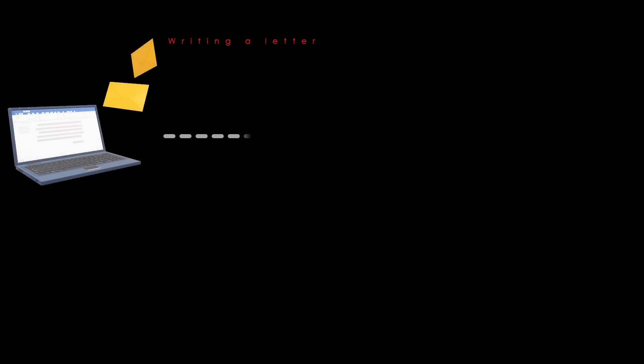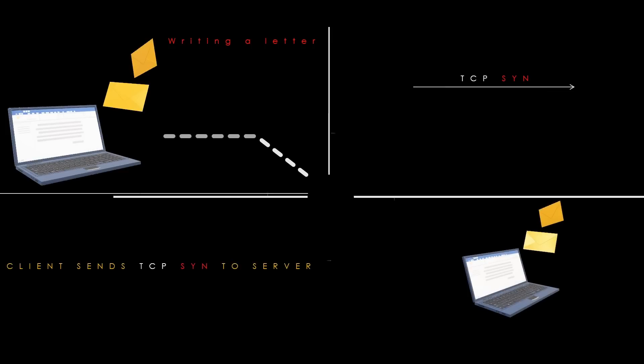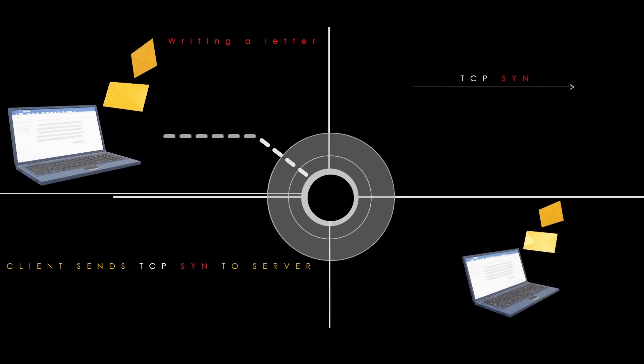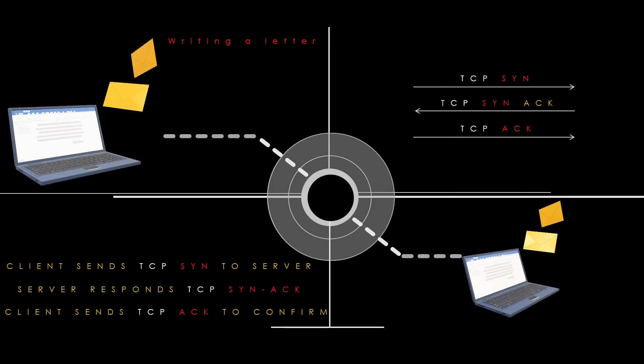As an analogy, the SYN segment is like writing a letter to someone, while the SYNACK packet is like receiving a letter in response to the original letter, indicating that the connection has been established and communication has begun. So: writing a letter = TCP SYN packet; receiving a reply = ACK received; replying back = TCP SYN from the other side to the sender. So we have SYN, SYNACK, and ACK.